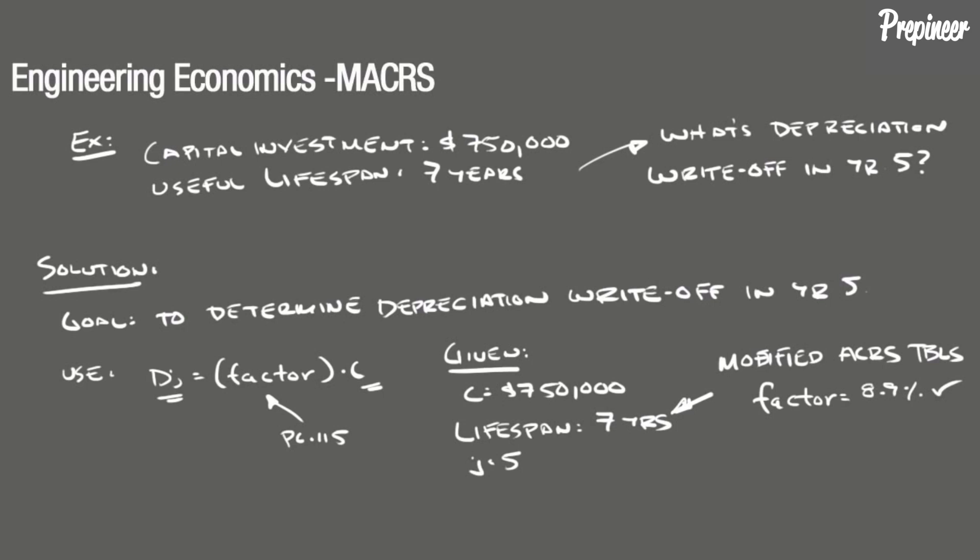So plugging these values into the equation, we find that D sub 5 equals 0.089 times $750,000, which equals $66,750. So the depreciation write-off in year five is $66,750.